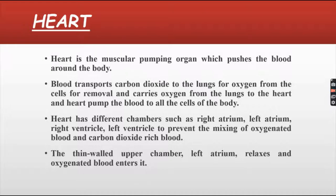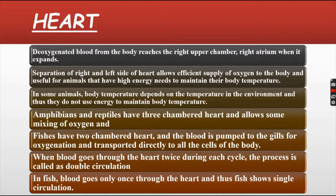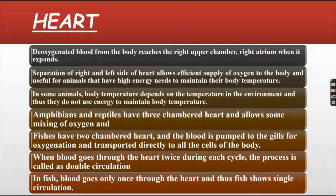The thin-walled upper chamber, the left atrium, relaxes and oxygenated blood enters it. Deoxygenated blood from the body reaches the upper chamber, the right atrium, when it expands. Separation of the right and left sides of the heart allows efficient supply of oxygen to the blood, which is useful for animals that have high energy needs to maintain their body temperature.